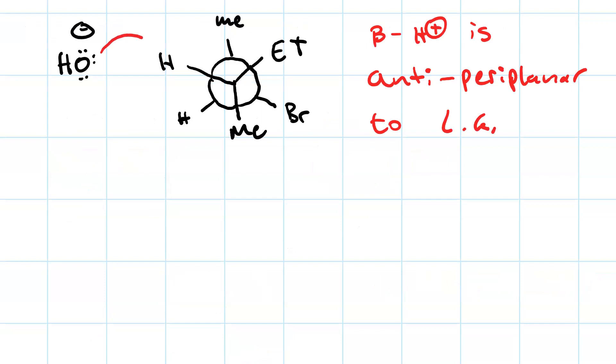Now our hydroxide ion will attack. That's the first curved arrow of proton transfer. Now, the second curved arrow is forming the pi bond. It's awkward looking in the Newman projection. And then the third curved arrow is loss of the leaving group.